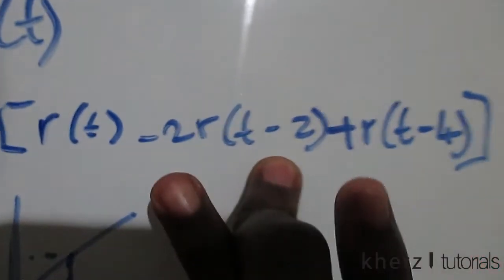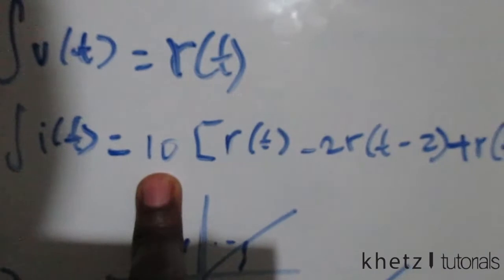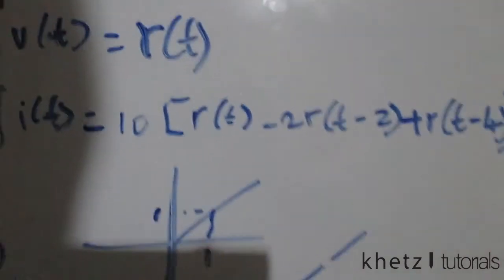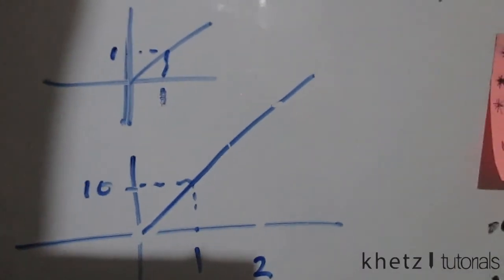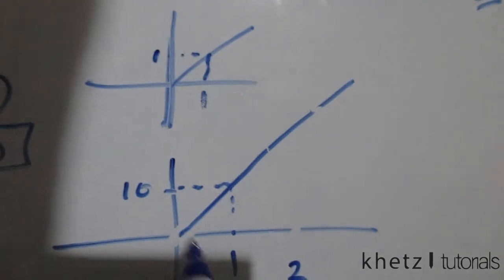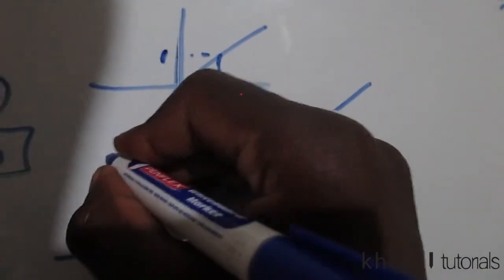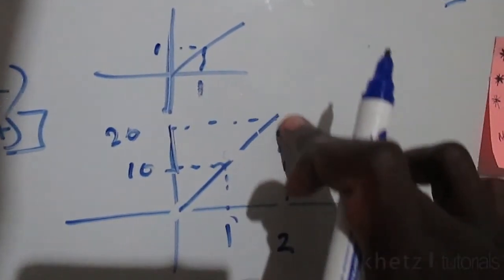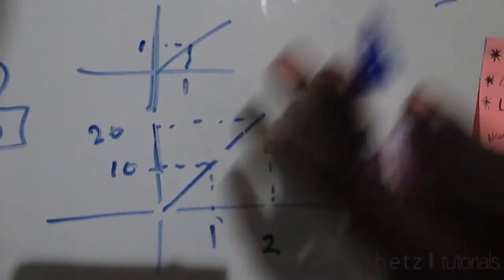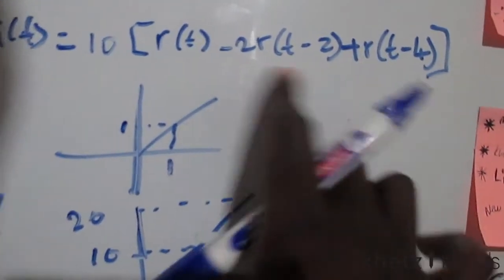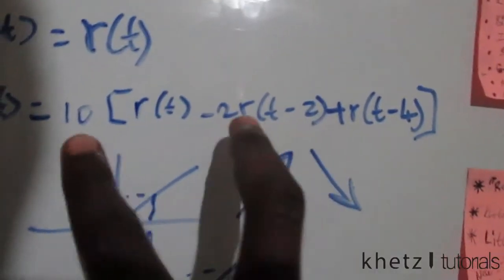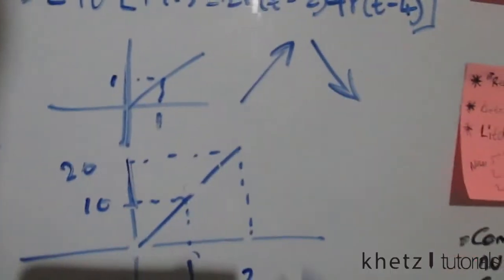At t=2 we have a change: we multiply 10 by -2, so the ramp function from that term has a slope of -20. Up to t=2, a slope of 10 gives a value of 20 at that point. Now we erase the infinite continuation and pay attention to this new change — a slope of negative 20.